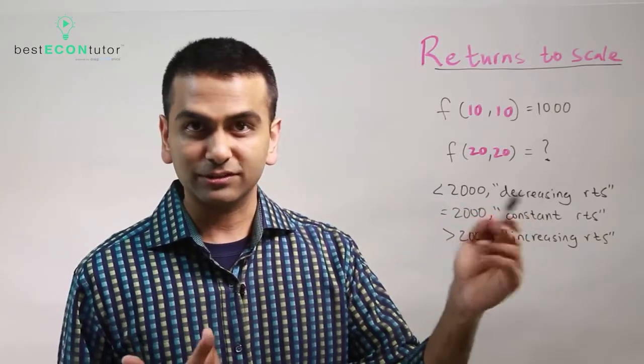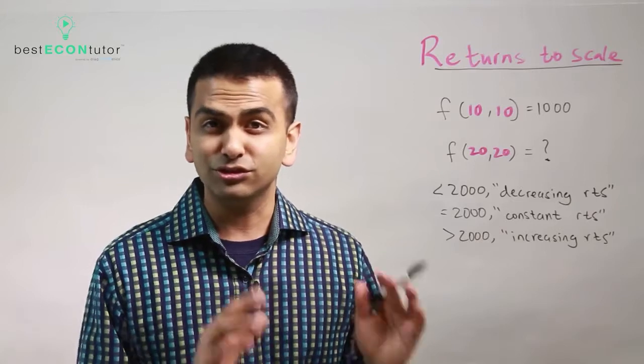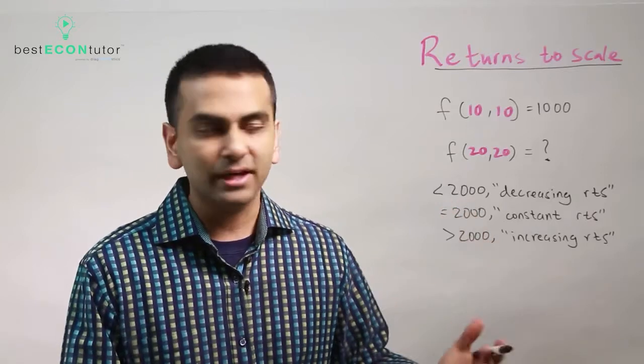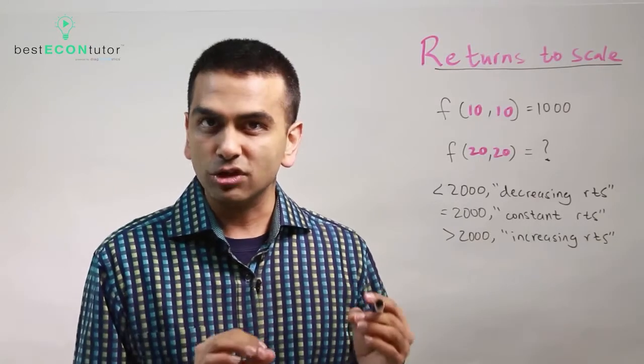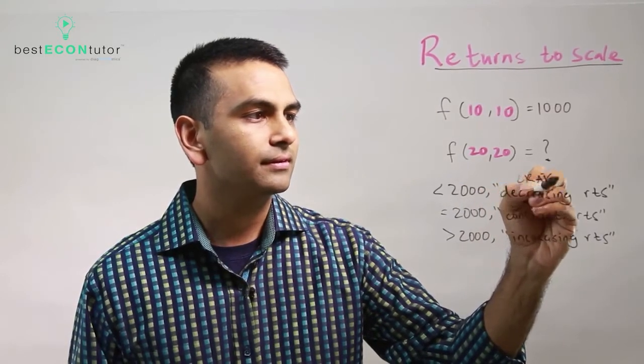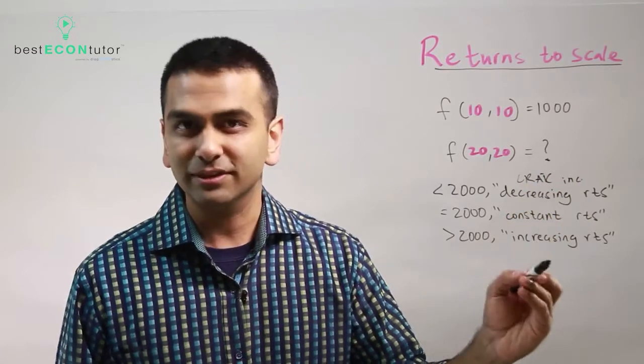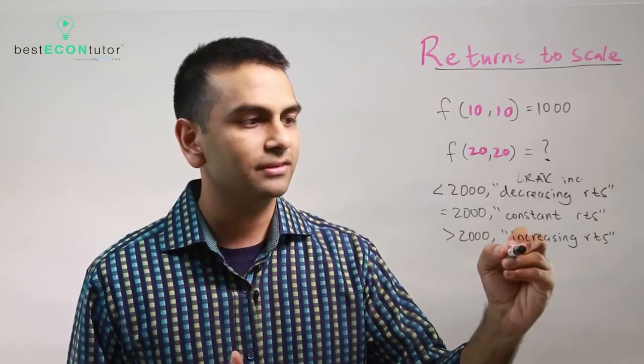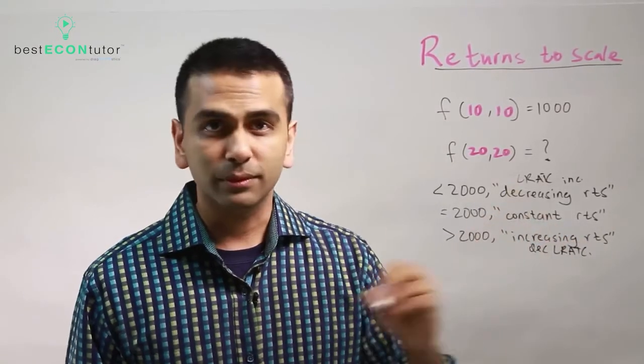If you have decreasing returns to scale, that's also going to have increasing cost. It's the same thing to say my company has decreasing returns to scale, meaning when I scale up and double all my inputs, they're not as productive so I less than double my output. Your long-run average total cost, LRATC, in this case is increasing. In the constant case it's constant, and in the increasing returns case it's decreasing. It's kind of the opposite: if your workers are productive with increasing returns to scale, that's going to be decreasing cost, decreasing LRATC. That's what returns to scale is.